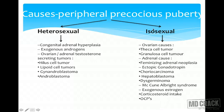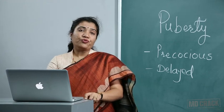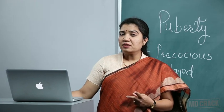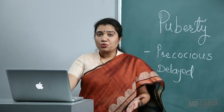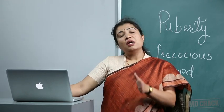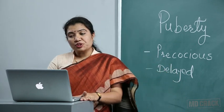In heterosexual peripheral precocious puberty, virilizing changes occur. Causes include congenital adrenal hyperplasia (late onset), exogenous androgens, and androgen-secreting ovarian or adrenal tumors such as hilus cell, lipoid cell, gynandroblastoma, and androblastoma. If an ovarian tumor secretes androgens (e.g., hilus cell) it causes heterosexual precocity; if it secretes estrogen (granulosa cell), it causes isosexual precocity.